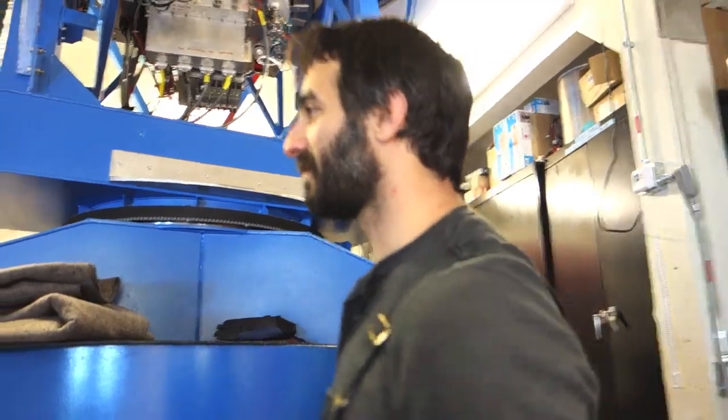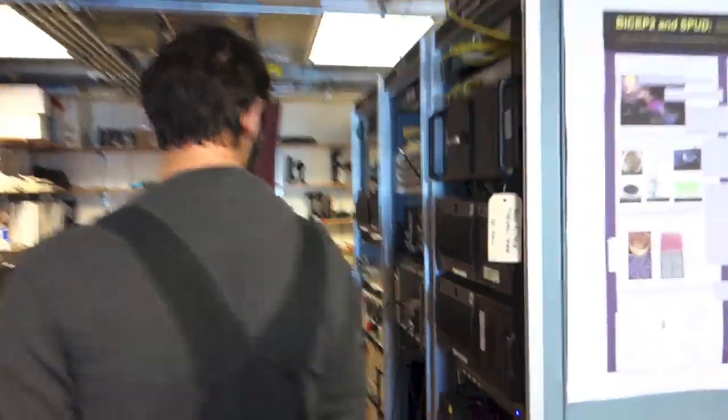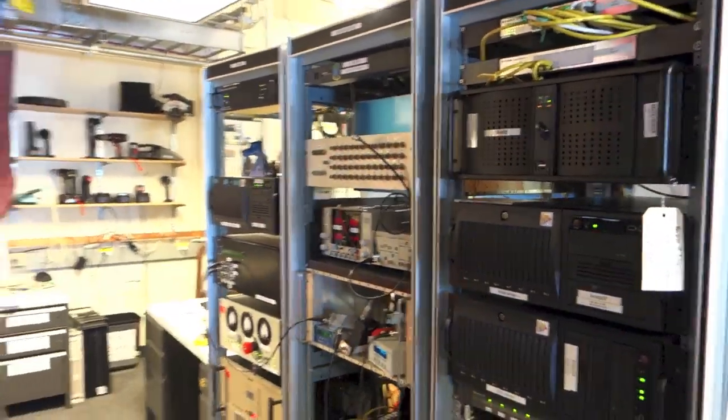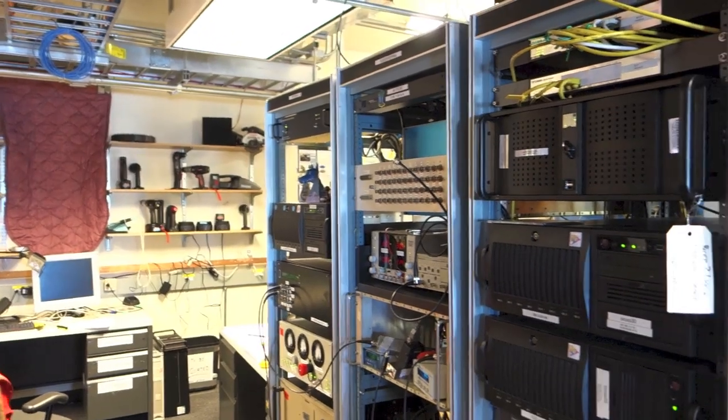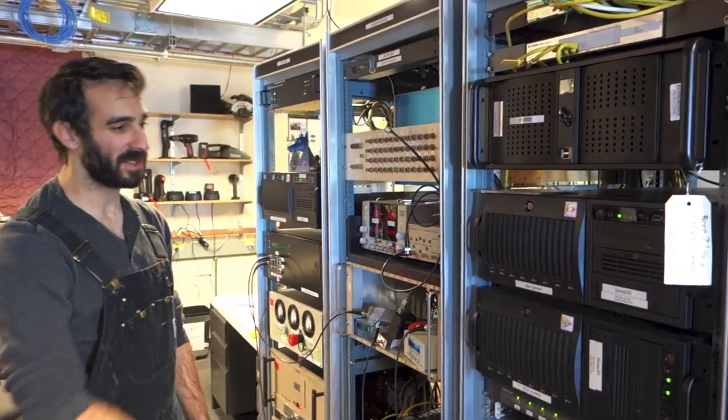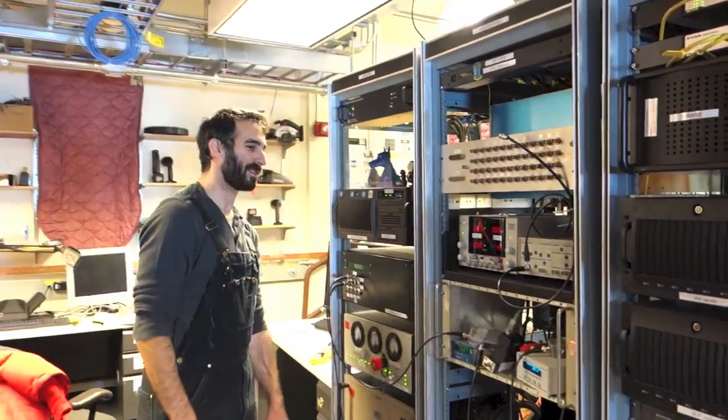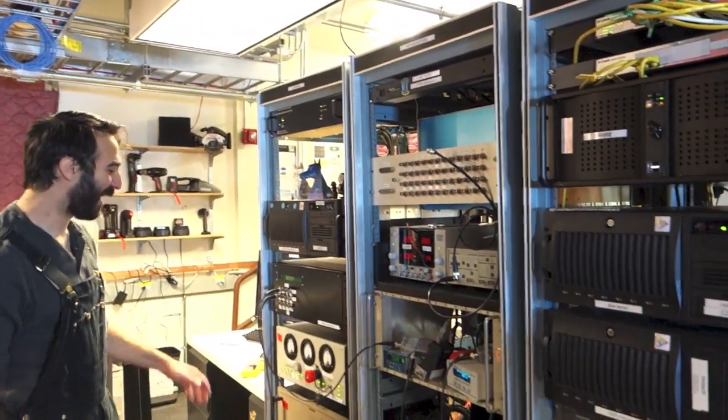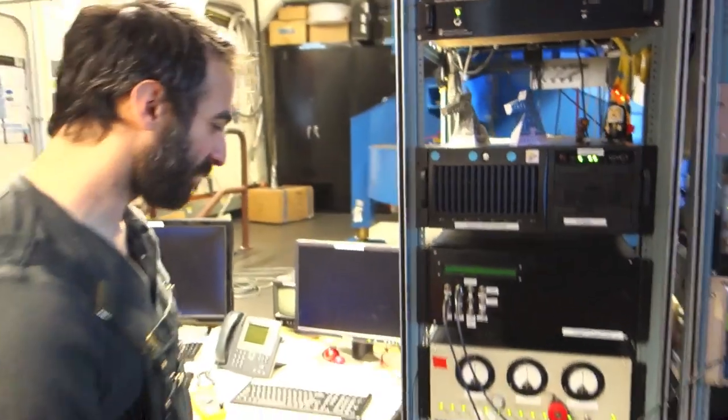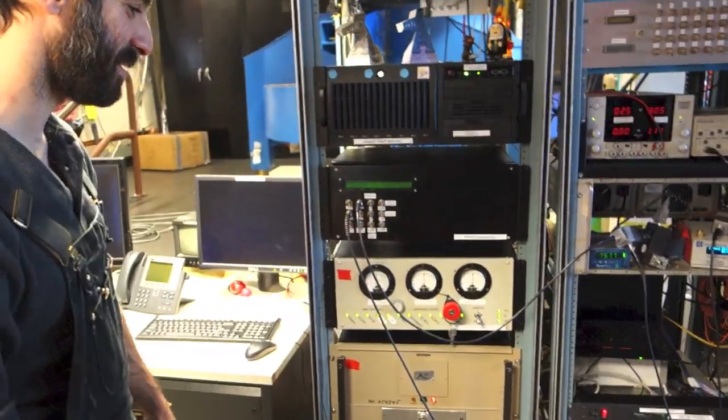Can you show us the electronics rack? This is the brains of the operation. We're running a bunch of rack mounted computers. One will read out the antennas, one will have the control program, one will hold the data. There's a firewall so we can't get hacked because this is actually a fairly powerful system. This beast here with three power supplies actually powers our mount, and this controls it. This is the panic button. Do not press the panic button.